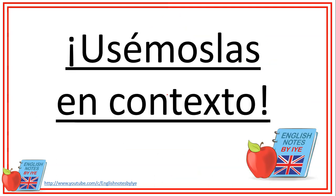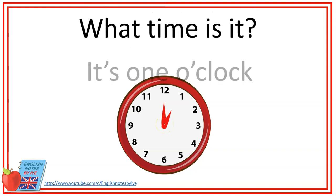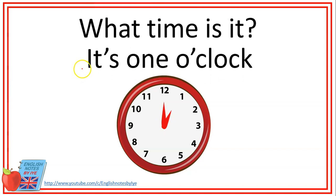Ahora vamos a usarlas en contexto. La pregunta para preguntar por la hora es what time is it? Para responder utilizamos el pronombre it y el verbo to be is, o su contracción it's. En este caso diríamos it's one o'clock. Para la hora en punto no hay diferencia entre inglés británico o americano, se dice exactamente igual, pero sí hay diferencia para las siguientes horas.